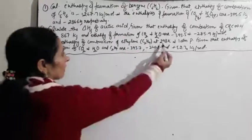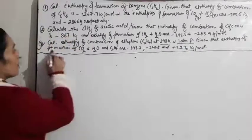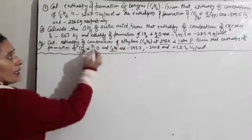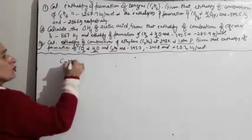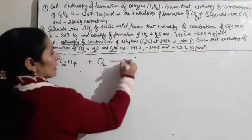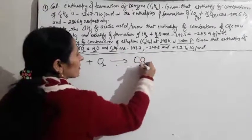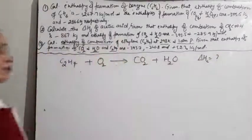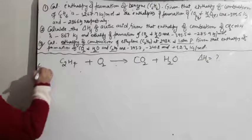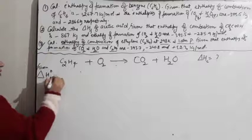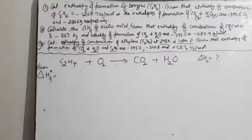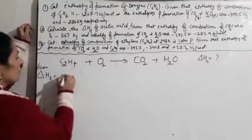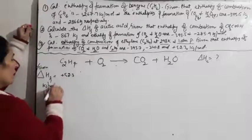Numerical 1: Calculate the enthalpy of combustion of C2H4 at 298 K and 1 atm pressure, given enthalpy of formation of CO2, H2O, and C2H4. The combustion reaction: C2H4 + O2 → CO2 + H2O. Any organic compound's combustion always gives CO2 and water. We need to calculate delta Hc for this reaction.